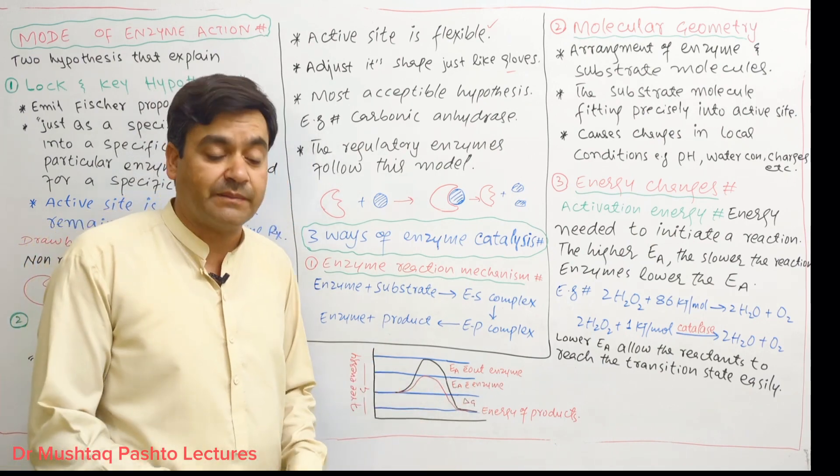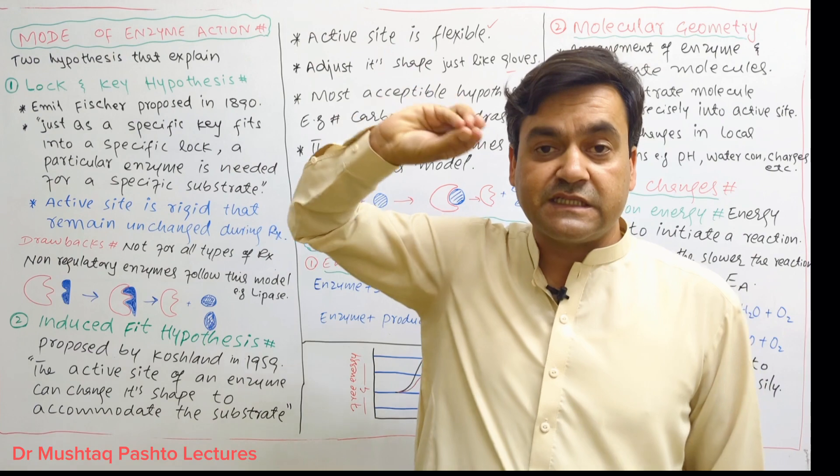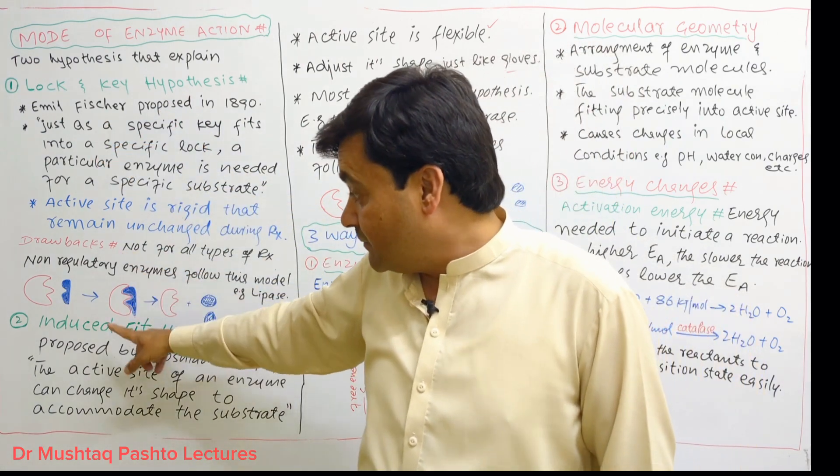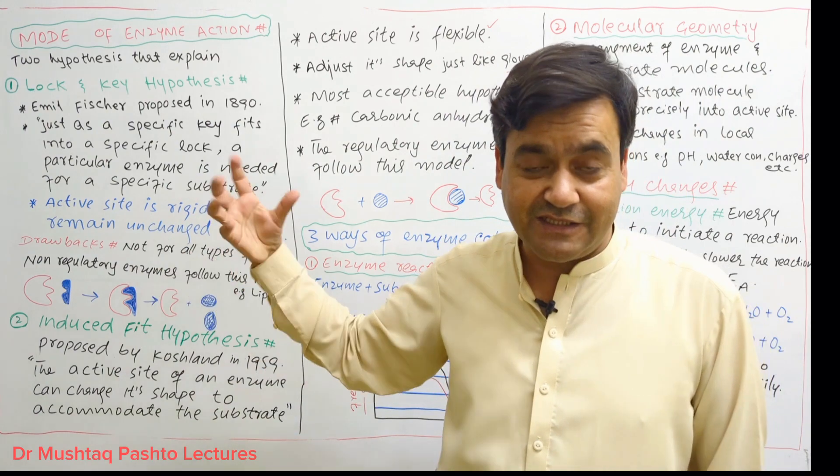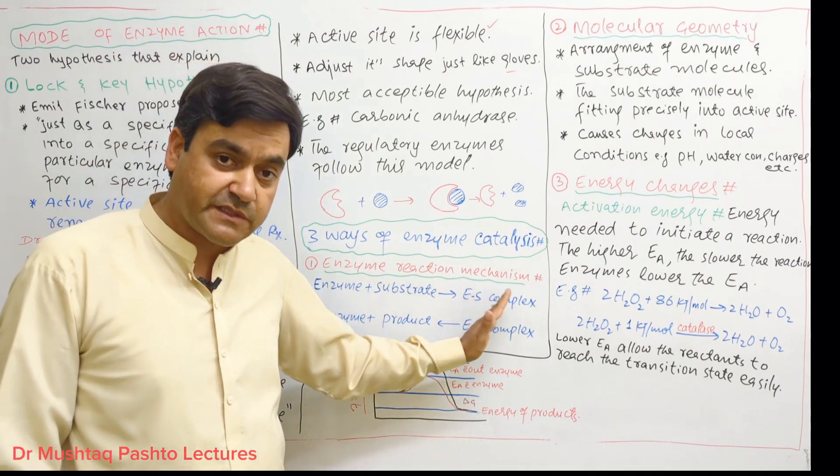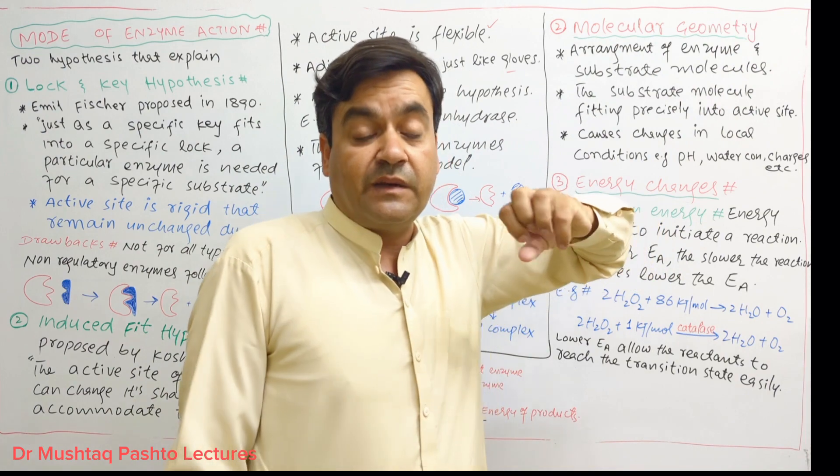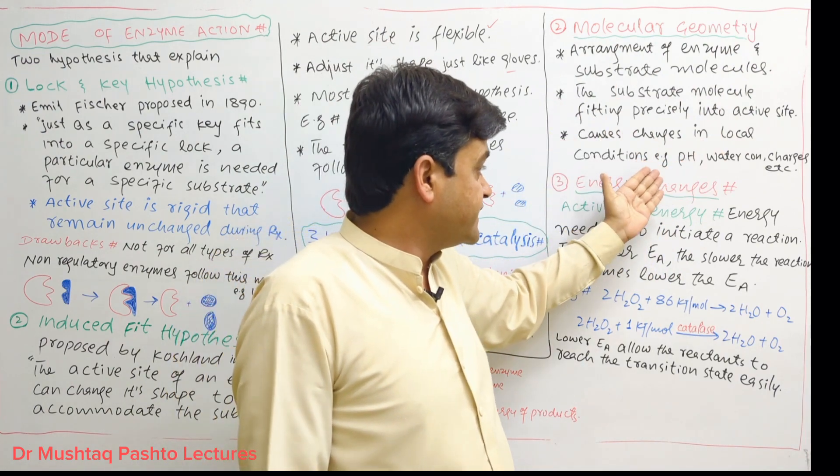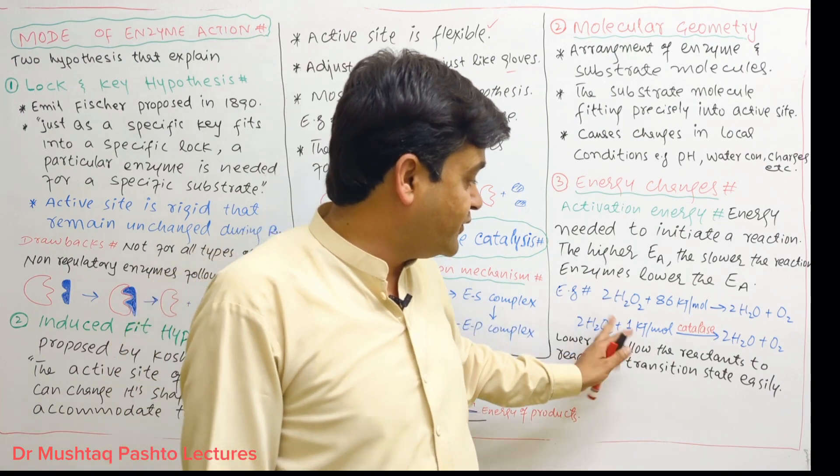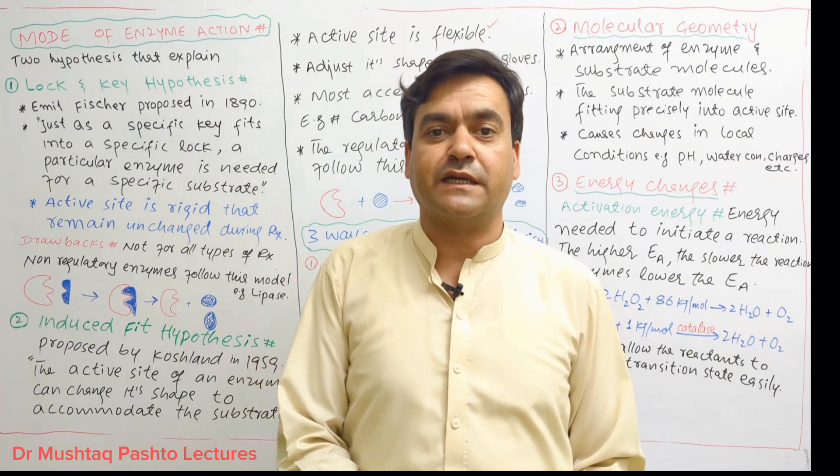In this lecture, we covered the mode of action of enzymes. Two hypotheses: lock and key, which is like the lock and key concept but lacks flexibility; and induced fit hypothesis, which shows the active site can slightly change shape to fit. We discussed three ways of catalysis: enzyme reaction mechanism where enzyme-substrate complex forms then enzyme-product complex forms and enzyme and product separate; molecular geometry which changes local conditions like pH, charges, and water concentration; and energy changes where enzymes lower the activation energy so reactions speed up. I hope you understood this lecture. Allah Hafiz.